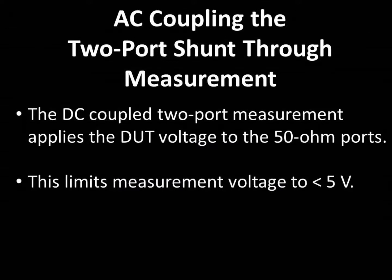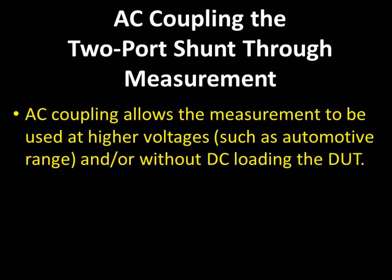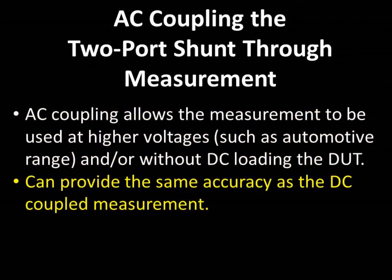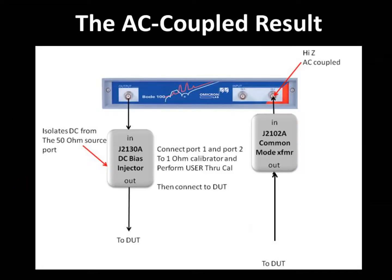In some cases, we'd like to make the two-port measurement at higher voltages. This is often the case in measuring battery impedance and output impedance of intermediate bus converters, input impedance of any DC-to-DC converter, or EMI filter stability. It's possible to AC-couple the two-port measurement, allowing measurement at higher voltages with the same accuracy as the DC measurement. In order to AC-couple the measurement, at least one DC blocker, such as the J2130A, is required. The DC blocker is required at the port 1 or oscillator side of the measurement. The port 2 channel, using the FRA mode, can be set as a high-impedance AC-coupled port. As in the case of the DC-coupled measurement, the common mode transformer is still required, unless the analyzer has a semi-floating or floating front end.